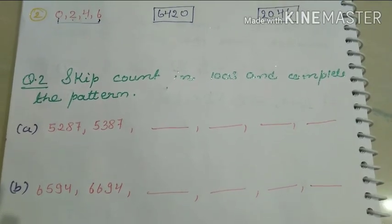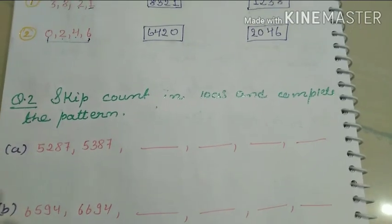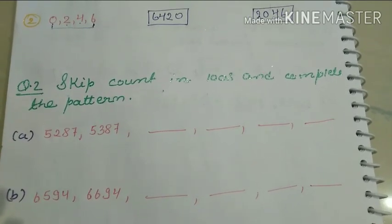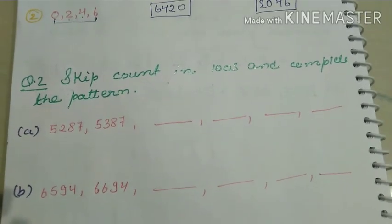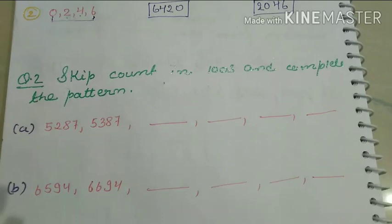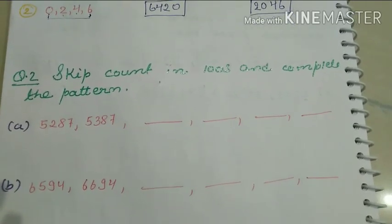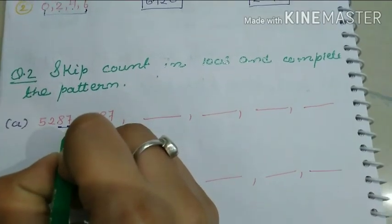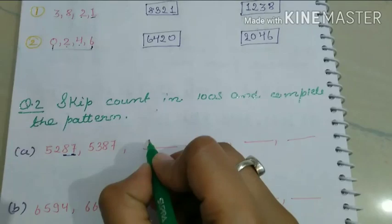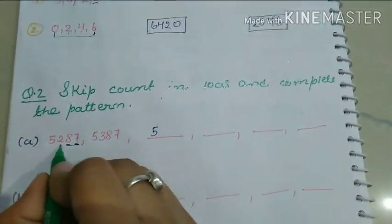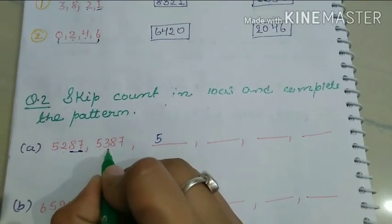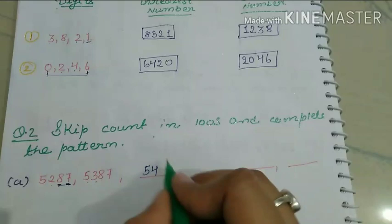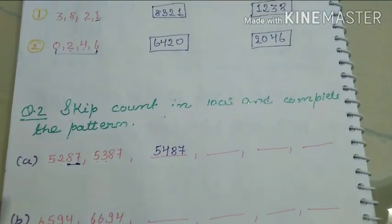Question 2: skip count in 100s and complete the pattern. When skip counting in hundreds, the digits at the tens and ones place remain the same — only the hundreds digit changes. So, for example: 5200, 5300, 5400.